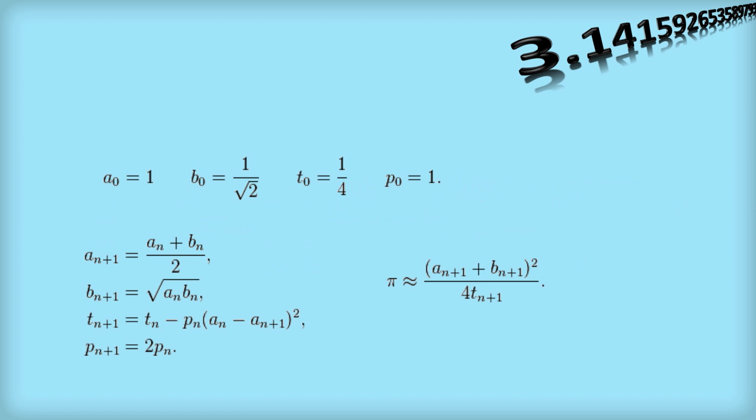So this one here is a nice example, often called Gauss, Legendre, Salomon and Brent. A bit of a link there for me, because I know Richard Brent. And you start off with these initial values for a0, b0, t0 and p0. Then you use this iteration formula to work out the next value. So given a0, we can work out a1, b1, t1 and p1.